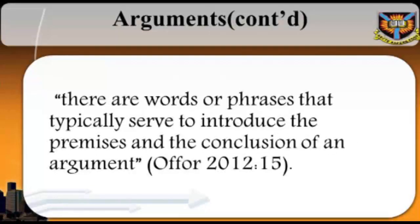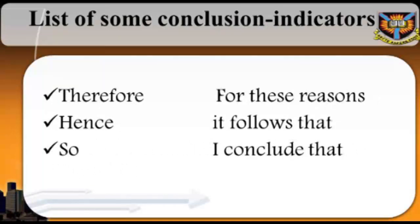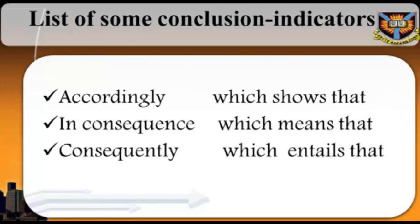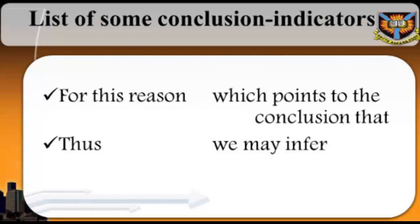These words and phrases are referred to variously as conclusion indicators and premise indicators. (Offer, 2012, page 15) The following is a list of some conclusion indicators: therefore, for these reasons, hence, it follows that, so, I conclude that, accordingly, which shows that, in consequence, which means that, consequently, which entails that, proves that, which implies that, as a result, which allows us to infer that, for this reason, which points to the conclusion that, thus, we may infer.